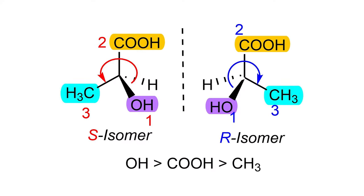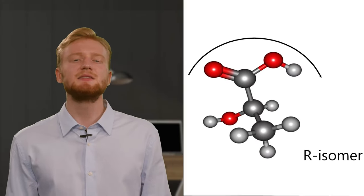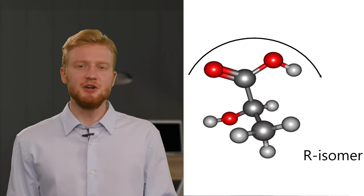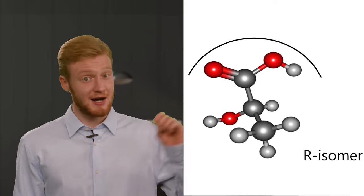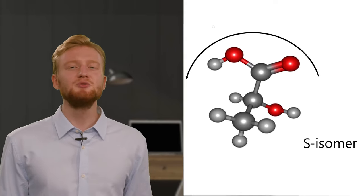As an example, let's take the situation of determining the configuration of an organic compound. Take the lactic acid molecule. In these and other cases, you should mentally draw an arrow from the senior to the junior substituent. If in this case the seniority decreases clockwise, it is the R isomer. In the reverse situation, the S isomer. So associative methods are very helpful.